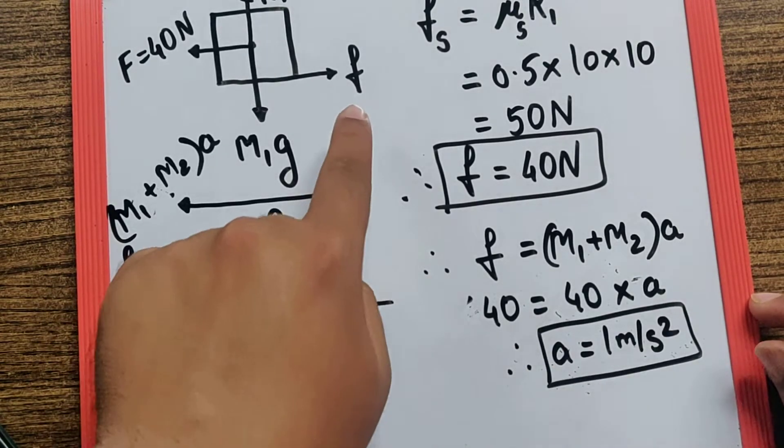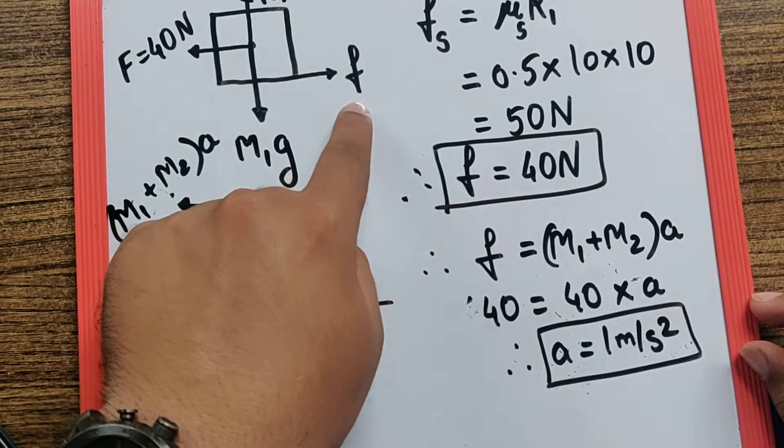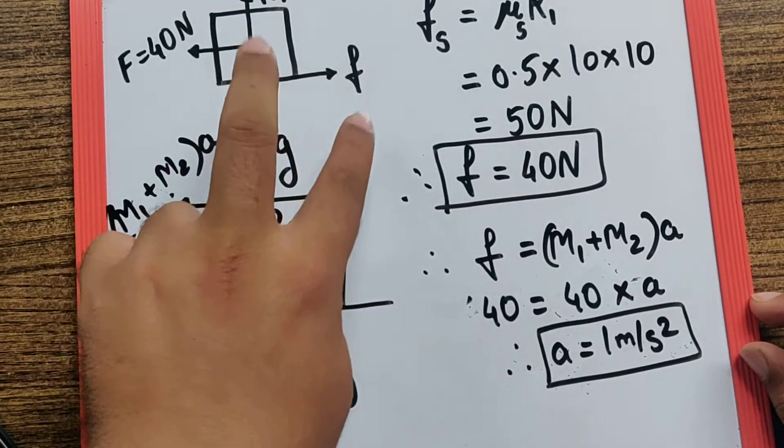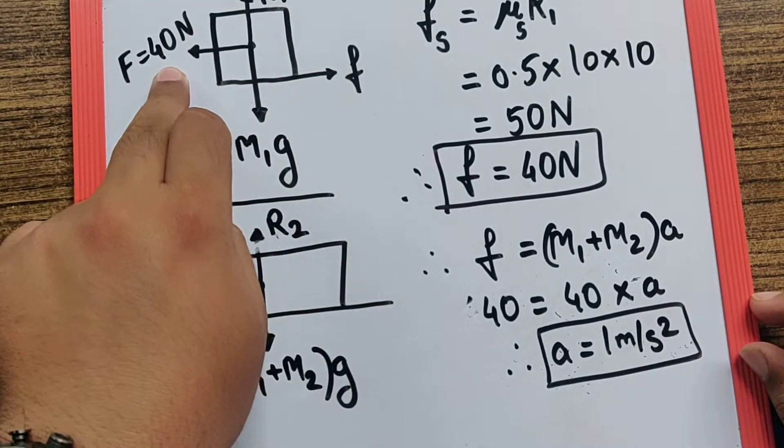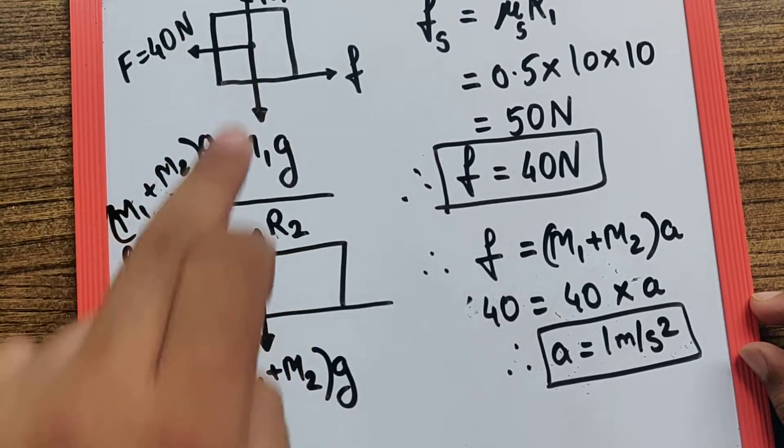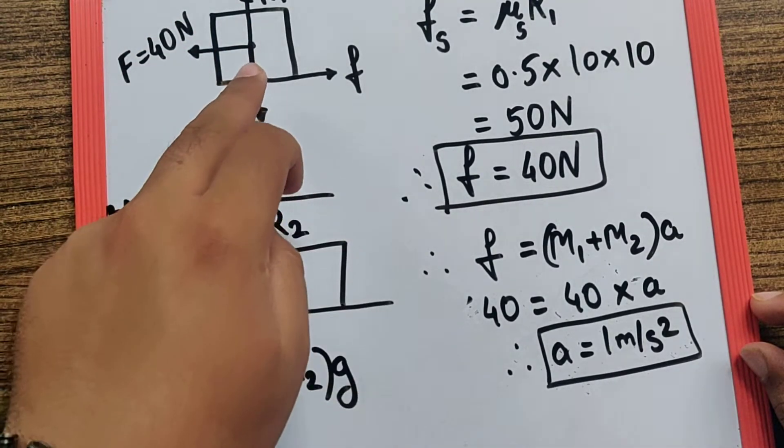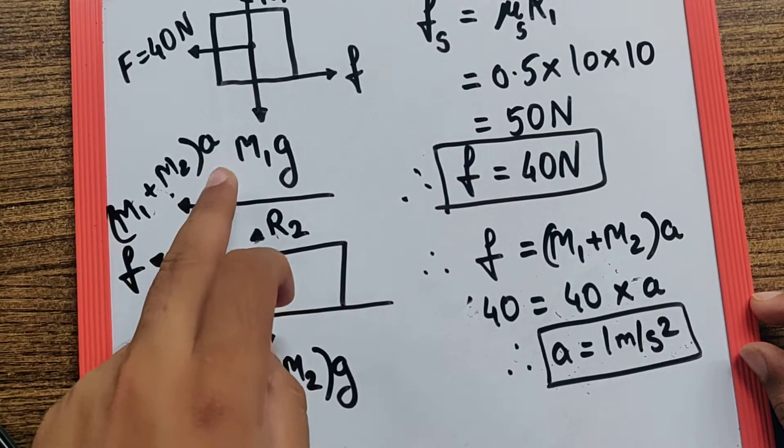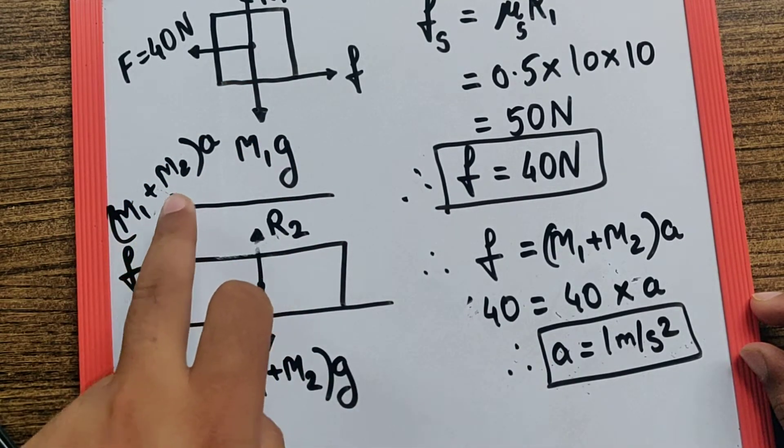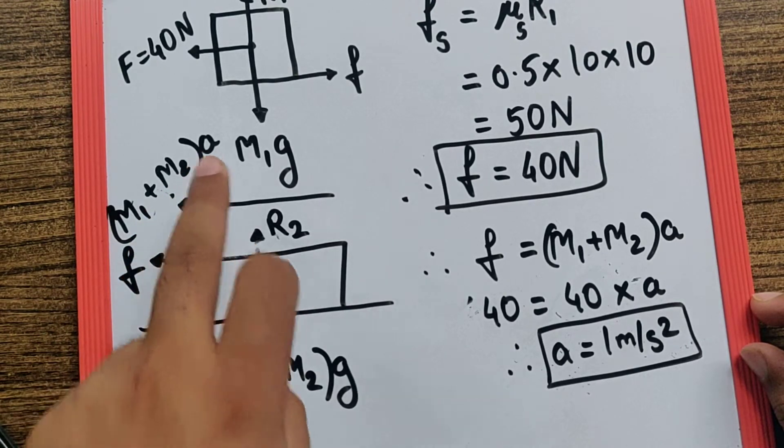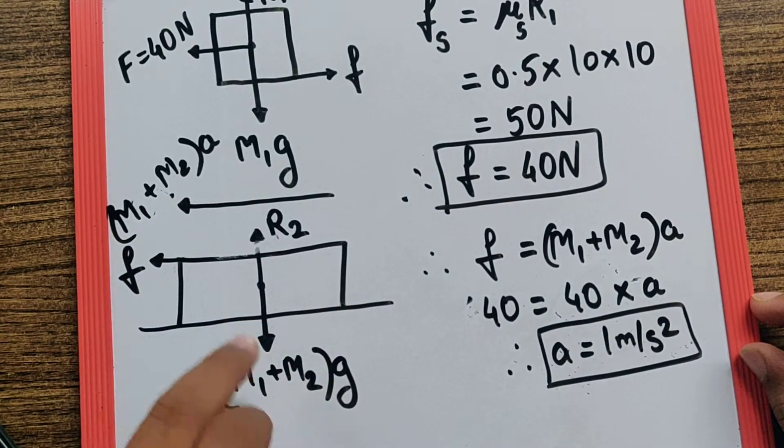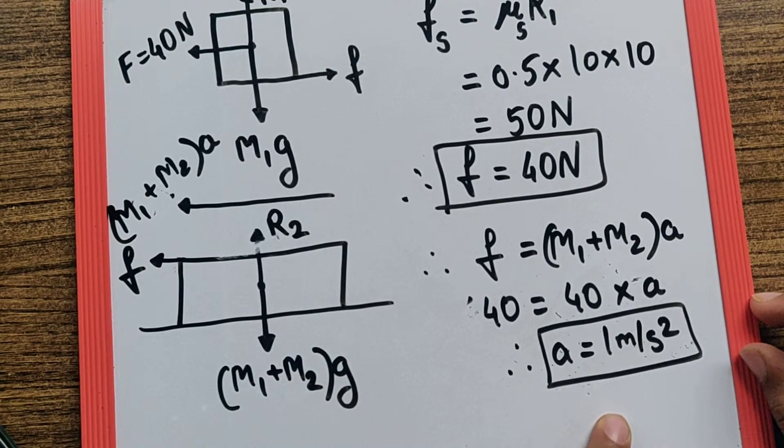In case this friction would have been kinetic and this body would be moving because of the excess force, then the acceleration of both blocks would have been different. So you can say the acceleration here is the same, which is why we have taken this as the common total mass into acceleration. Otherwise, I would have taken only M2a, which I tried and got 1.33 meters per second squared.